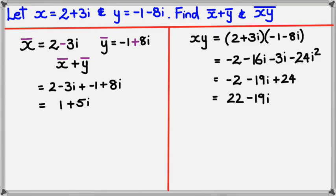So if we want to work out what the conjugate of xy, the product of x and y, conjugate of xy would simply be 22 plus 19i.